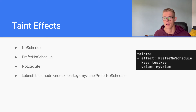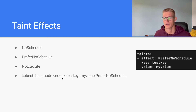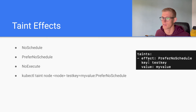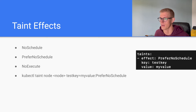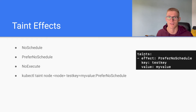If we want to apply a taint using kubectl, we can run kubectl taint node, the node name, and then a key, a value, and the actual effect that we want to apply. What you see over to the right here is how this would look in YAML — we have our effect, our key, our value, and this taints field is just under the spec field for the node that we are defining.